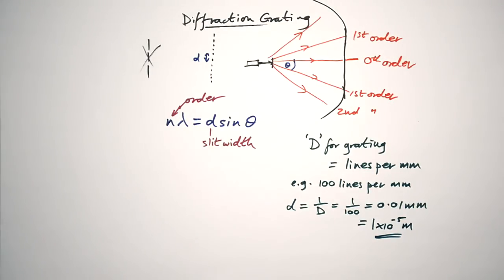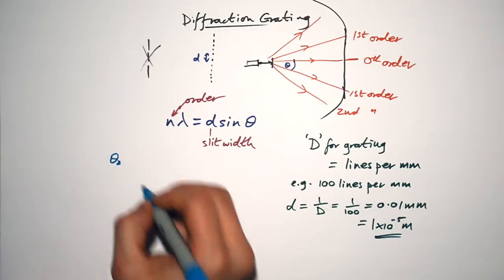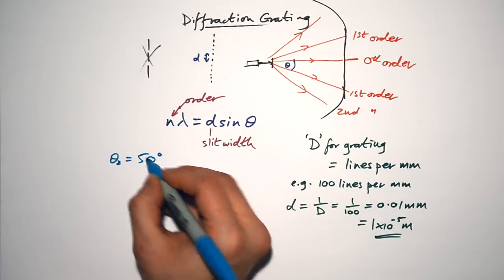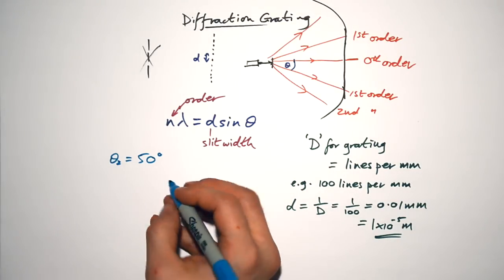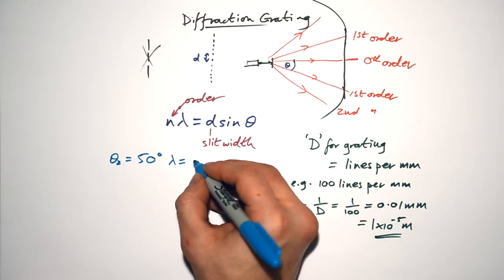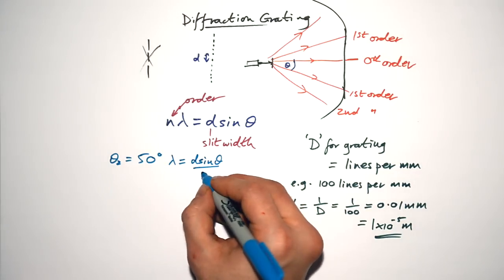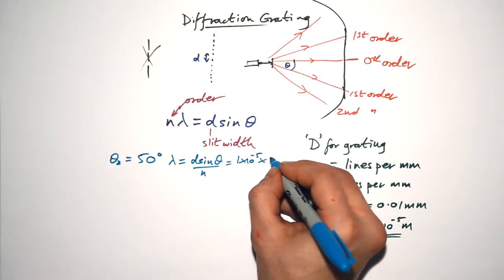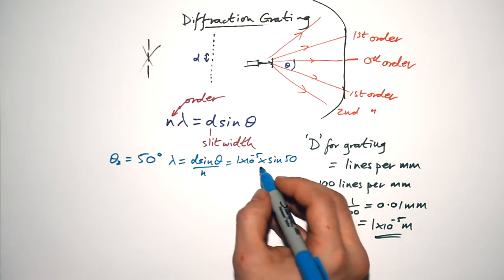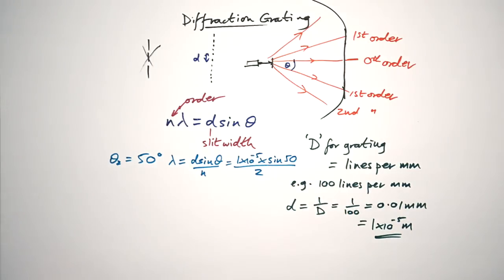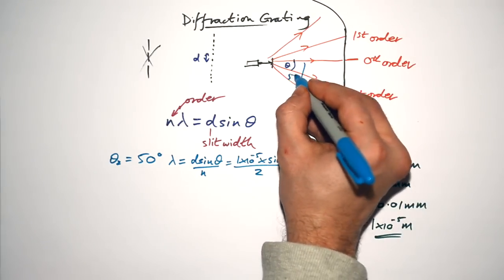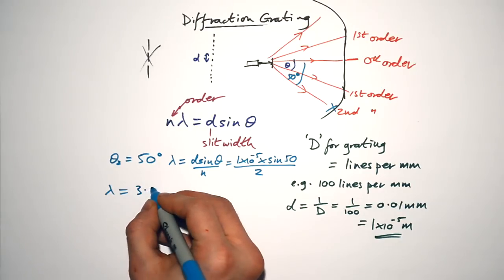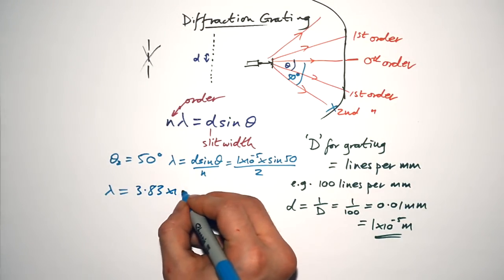For example, if the second order angle θ₂ = 50°, and d = 1 × 10⁻⁵ m, then λ = d sinθ / n = (1 × 10⁻⁵ × sin 50°) / 2. Make sure you are in degrees, not radians. This gives a wavelength of 3.83 × 10⁻⁶ m.